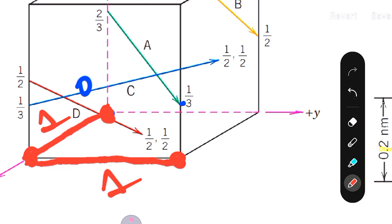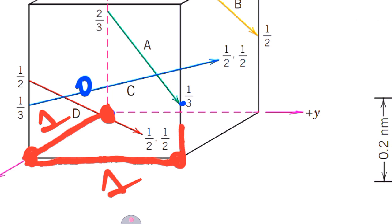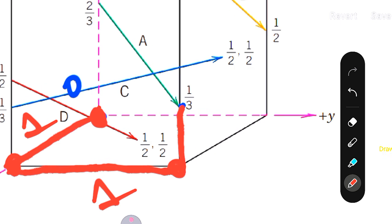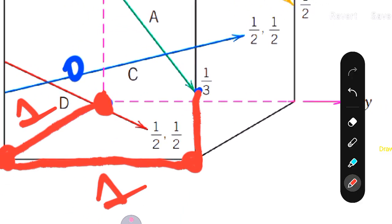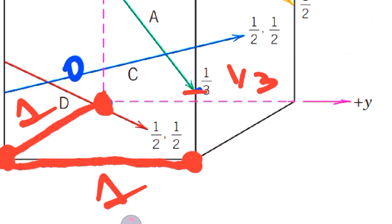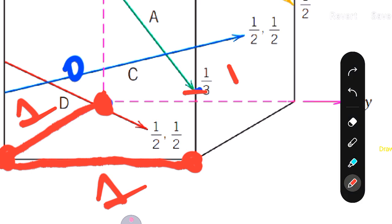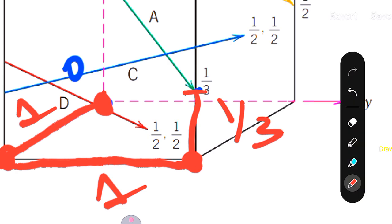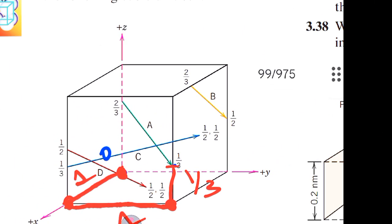From that point, I'll move one unit along y direction to reach directly below the head point. Then from there, I'll move 1/3 unit along z direction to reach the head point. They have already told us this point is at 1/3 along z. So the head coordinates are (1, 1, 1/3).